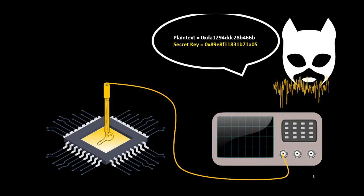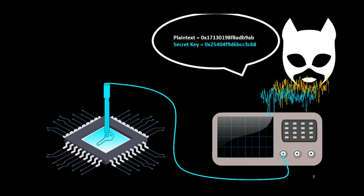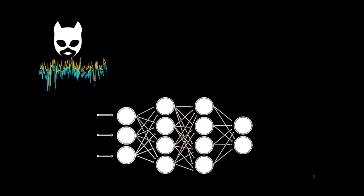Because the adversary can configure the plaintext and the secret key, she can perform as many encryptions as she wants to generate physical traces and find some leakages related to the secret she wants to retrieve. In deep learning-based side-channel attacks, the adversary generates a neural network to automatically match a physical trace with the correct target's sensitive value. In this kind of attack, two phases can be highlighted.